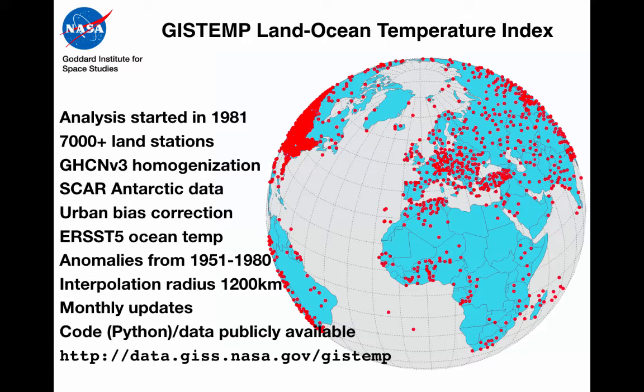So this is an anomaly index — the changes from that baseline period. We update this monthly and the code and data is all publicly available at the GISTEMP website.